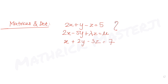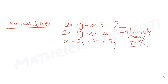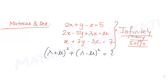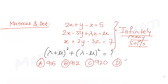We have been given that this system of equations has infinitely many solutions, and we need to find the value of the expression (λ + μ)² + (λ - μ)². The answer choices given are 916, 912, 920, and 904, and we need to figure out which one is correct.